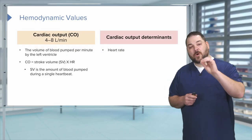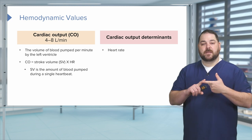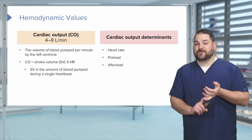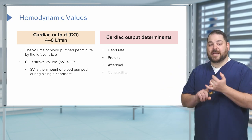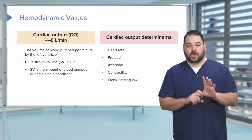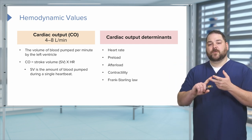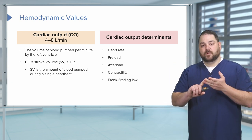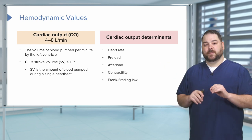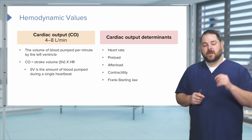The determinants of cardiac output are heart rate, preload, afterload, contractility, and Frank-Starling Law. Heart rate, preload, and afterload we're going to discuss a little bit later in this series so it makes a little bit more sense.